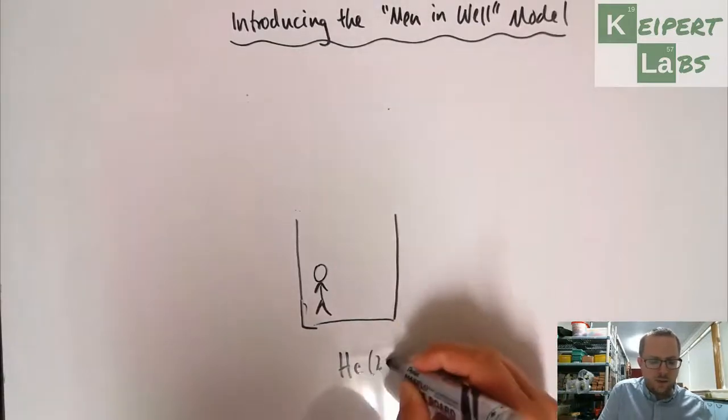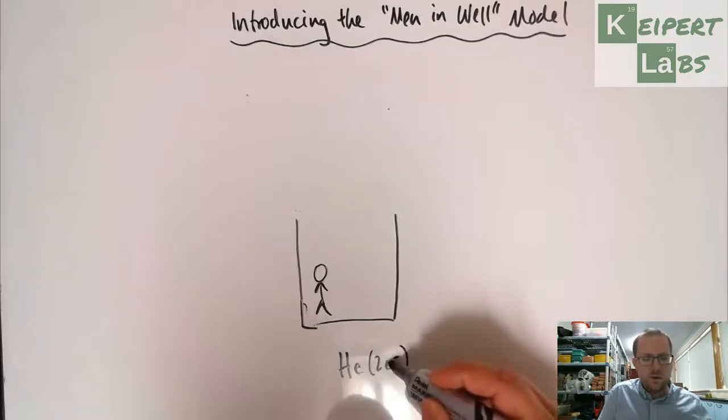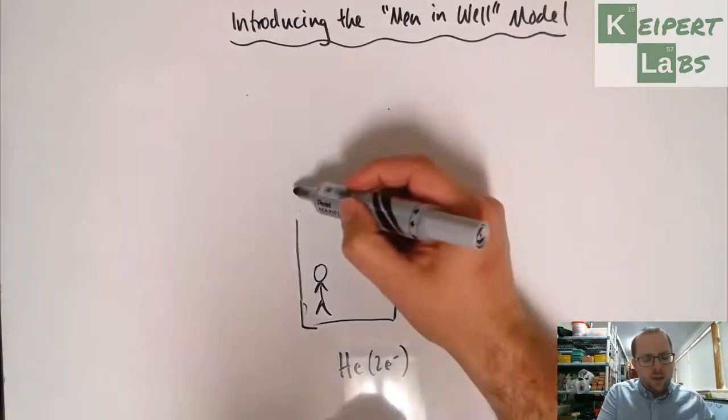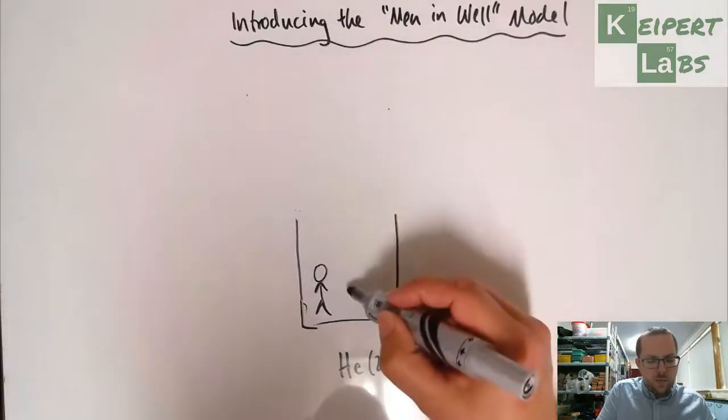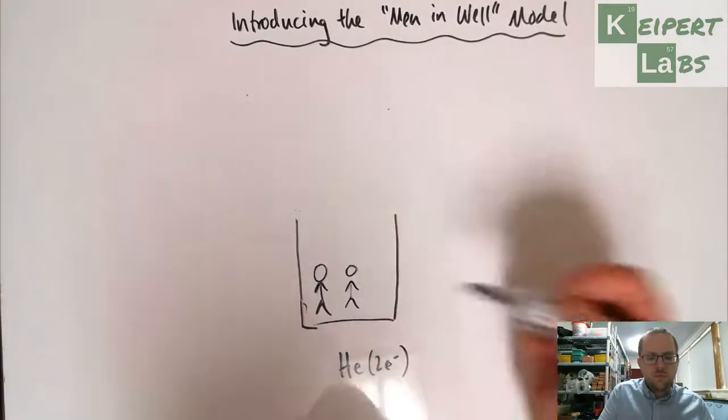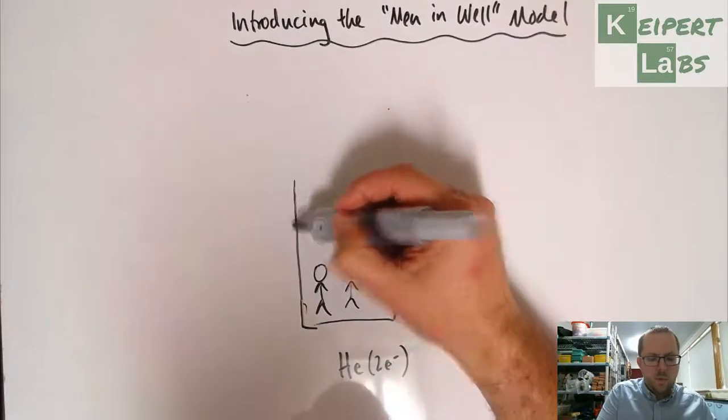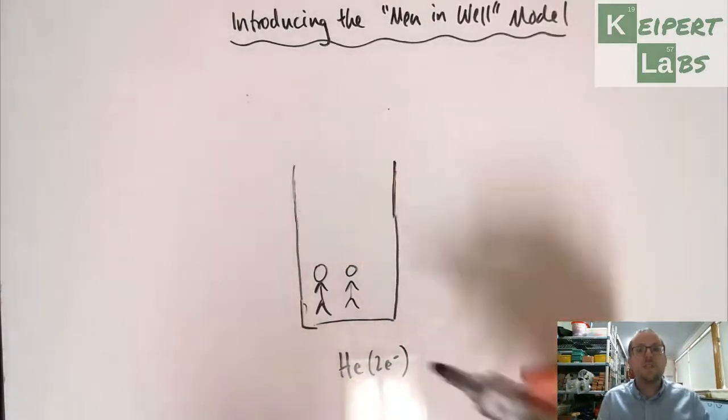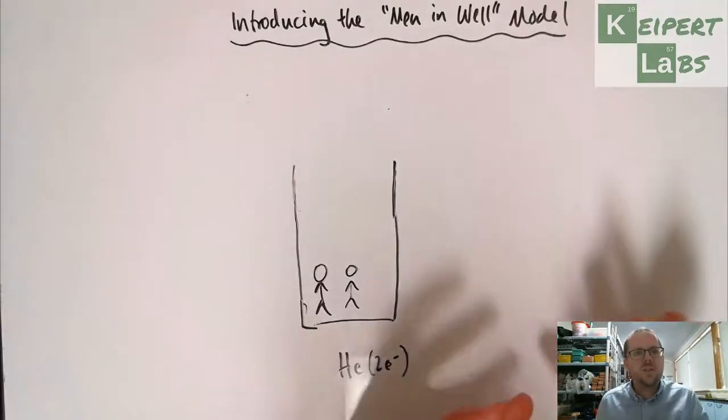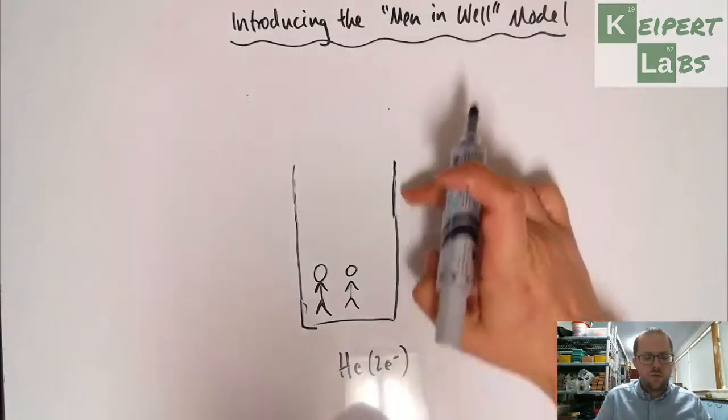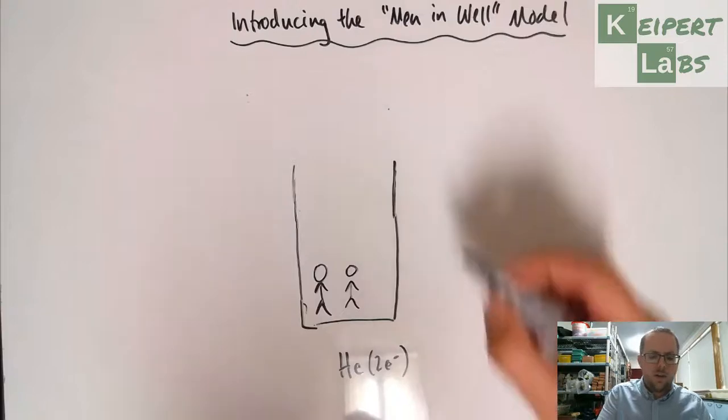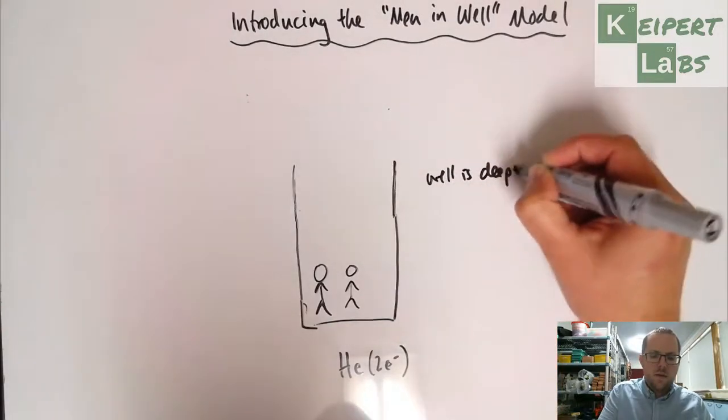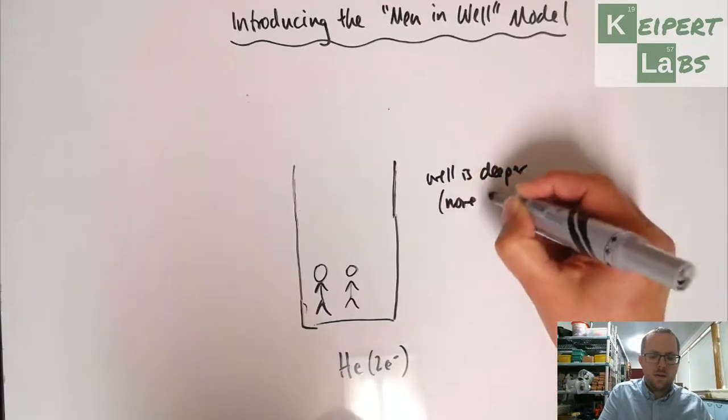Helium has two electrons. This is a little e minus to represent electrons. Now what we can notice from the data is there's two things. We have two men at the bottom and our well is deeper than it was before, because the energy that's involved in getting him out is harder than it used to be. So we can draw our well just a little bit higher. The well is deeper, more energy needed.